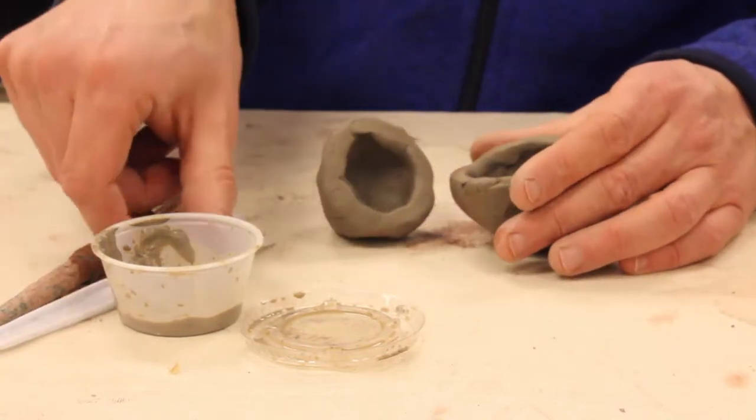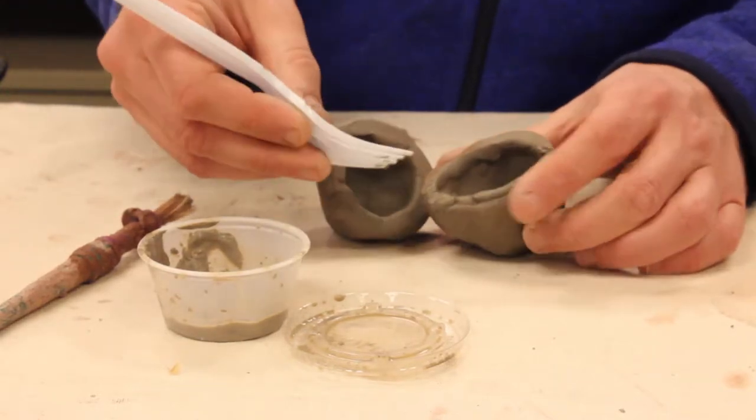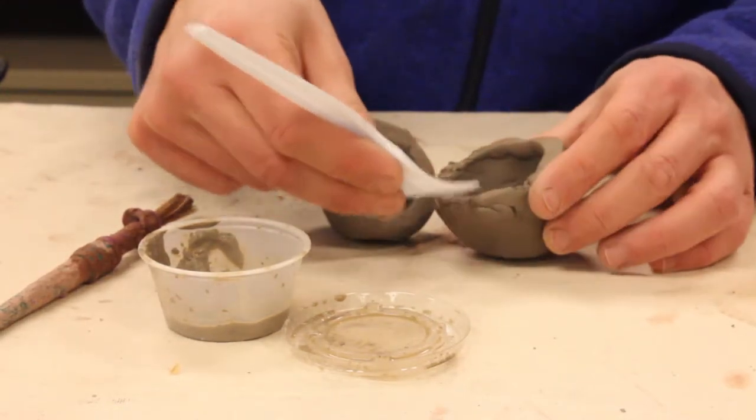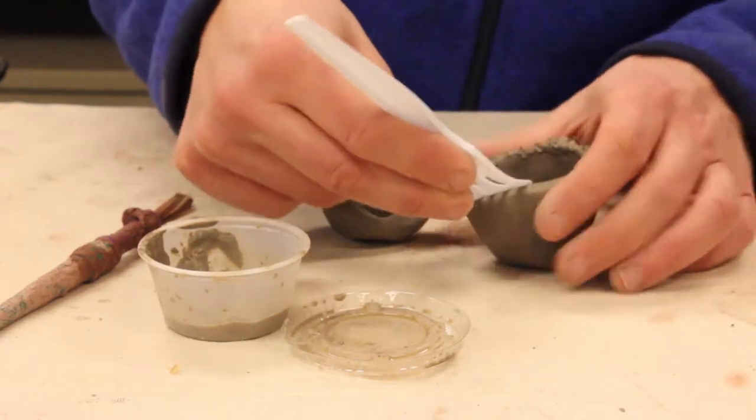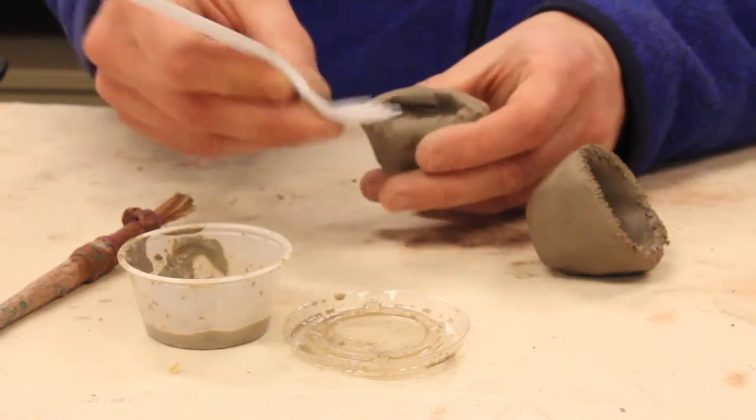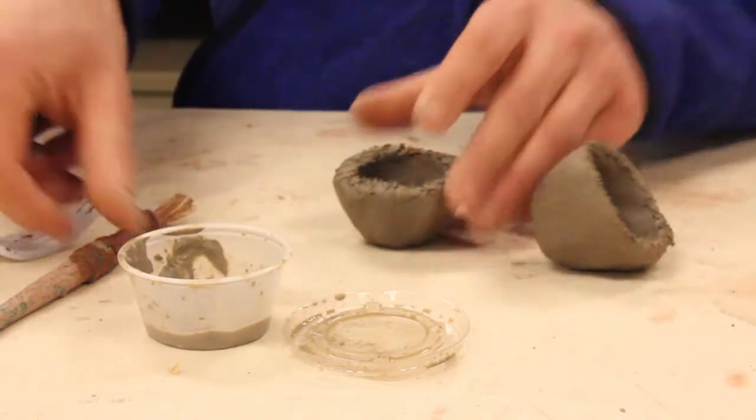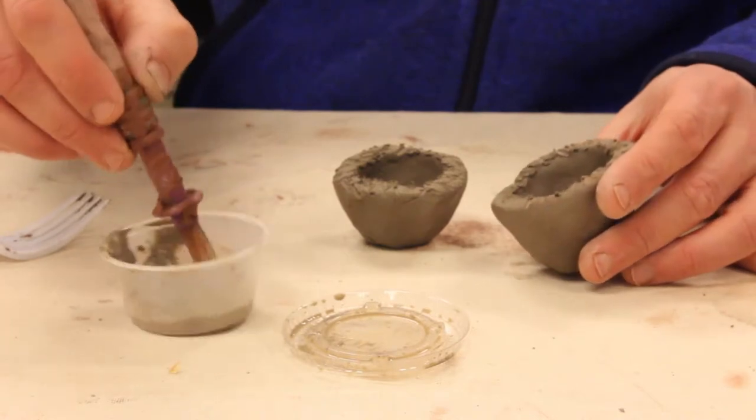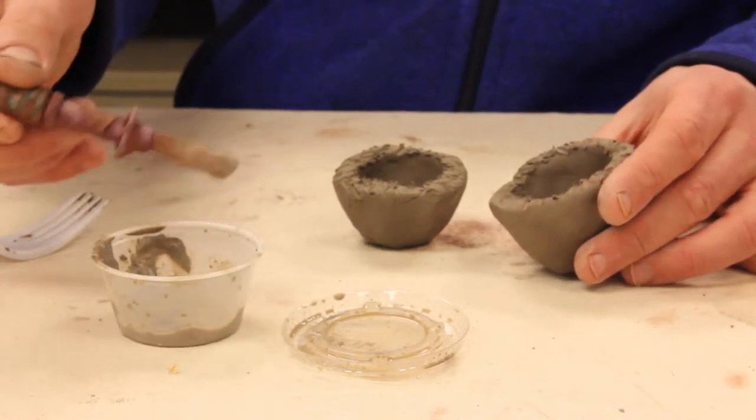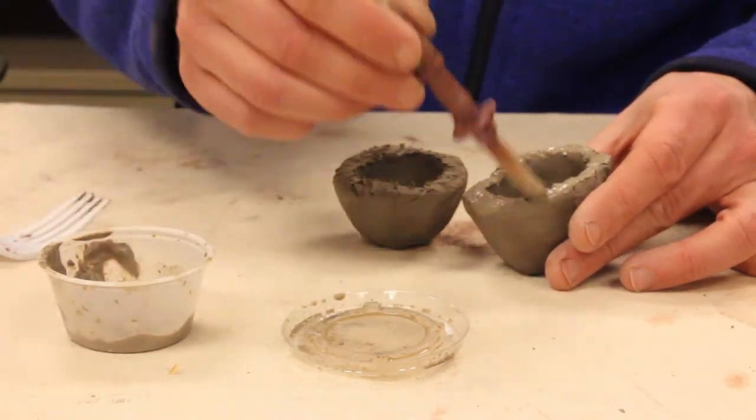So what I'm going to do is take my scoring tool and score along the rim of this here and on this one here too. And then I'm going to take my brush and put a little bit of slip along the edge of each pinch pot.